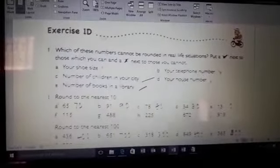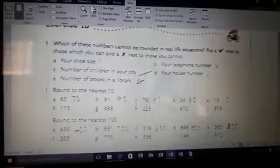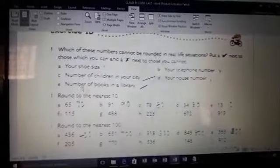Your telephone number, your house number, those things are fixed. Number of children in your city, we can round it. Number of books in your library, we can round it.